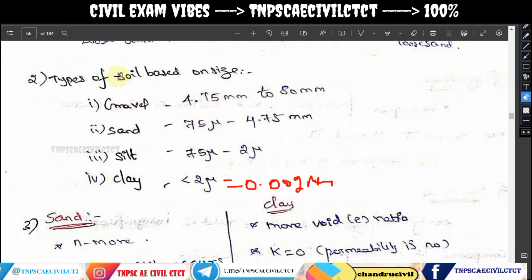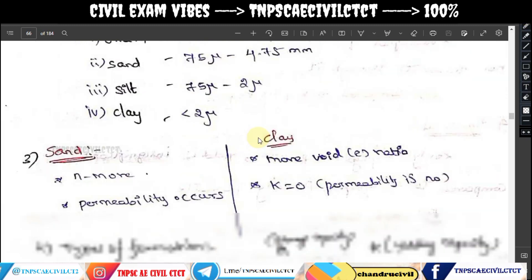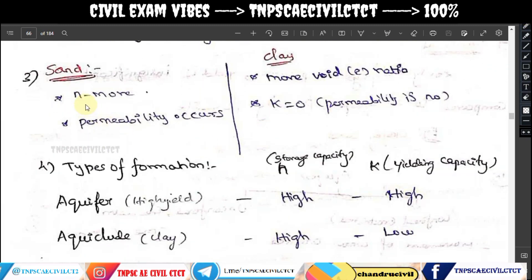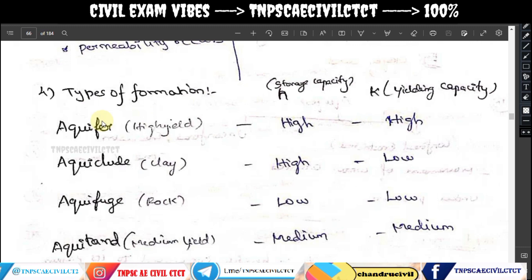Next, sand versus clay. Sand has a higher number of porosities and a higher void ratio. Sand is more easy-flowing, but clay is not permeable. So sand has higher permeability compared to clay. Next, types of formations — we will talk about aquifuge and aquitard.